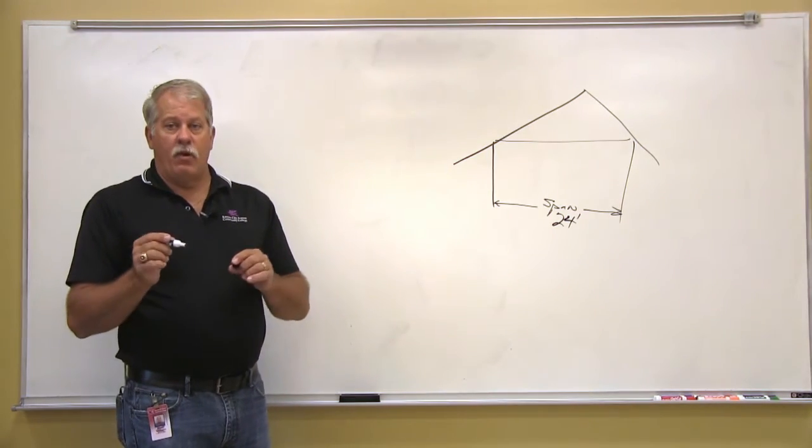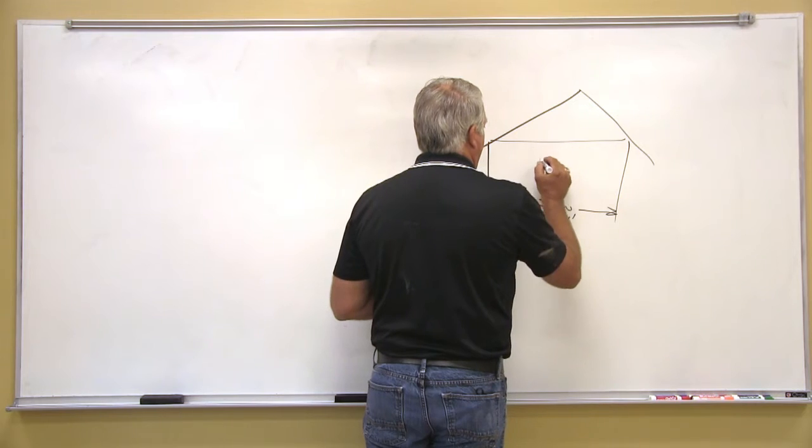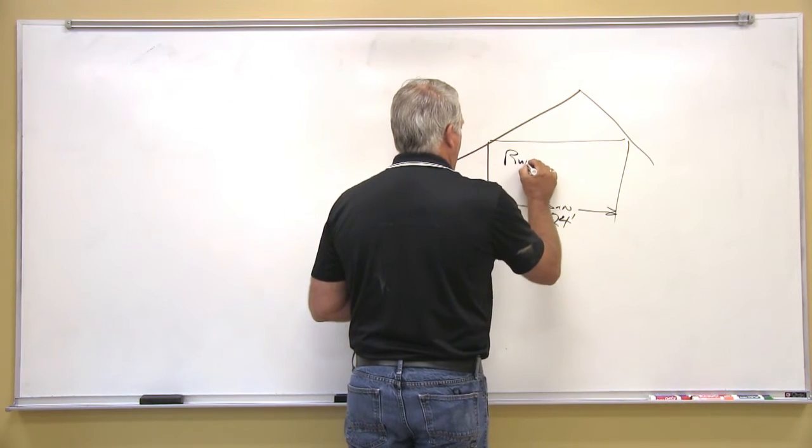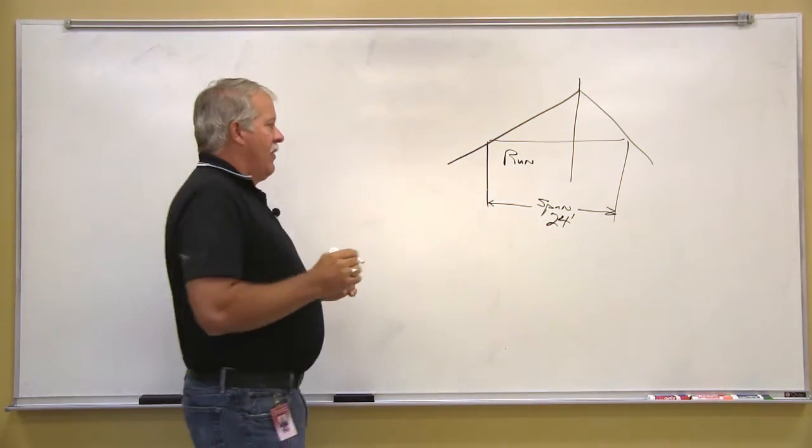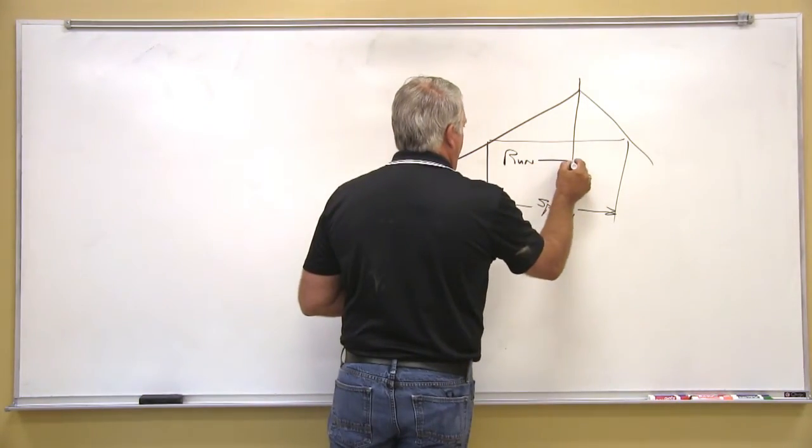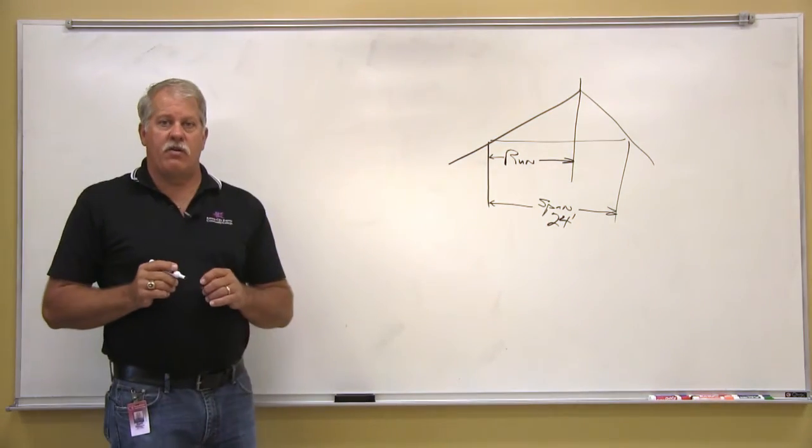The next important factor that we need to know is the run. If I take a line and divide that roof in half, the distance from the ridge to the edge of the building is considered the run.